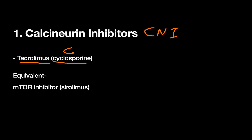Cyclosporine, abbreviated CSA, does similar things to tacrolimus and was actually invented first, but is a little less potent, so tacrolimus is the workhorse. Some patients who don't do well with either can be put on sirolimus, which works via mTOR inhibition. Despite the similar-sounding names, tacrolimus and cyclosporine are both calcineurin inhibitors, while sirolimus is a completely different class. mTOR inhibition similarly affects T-cell activation pathways.